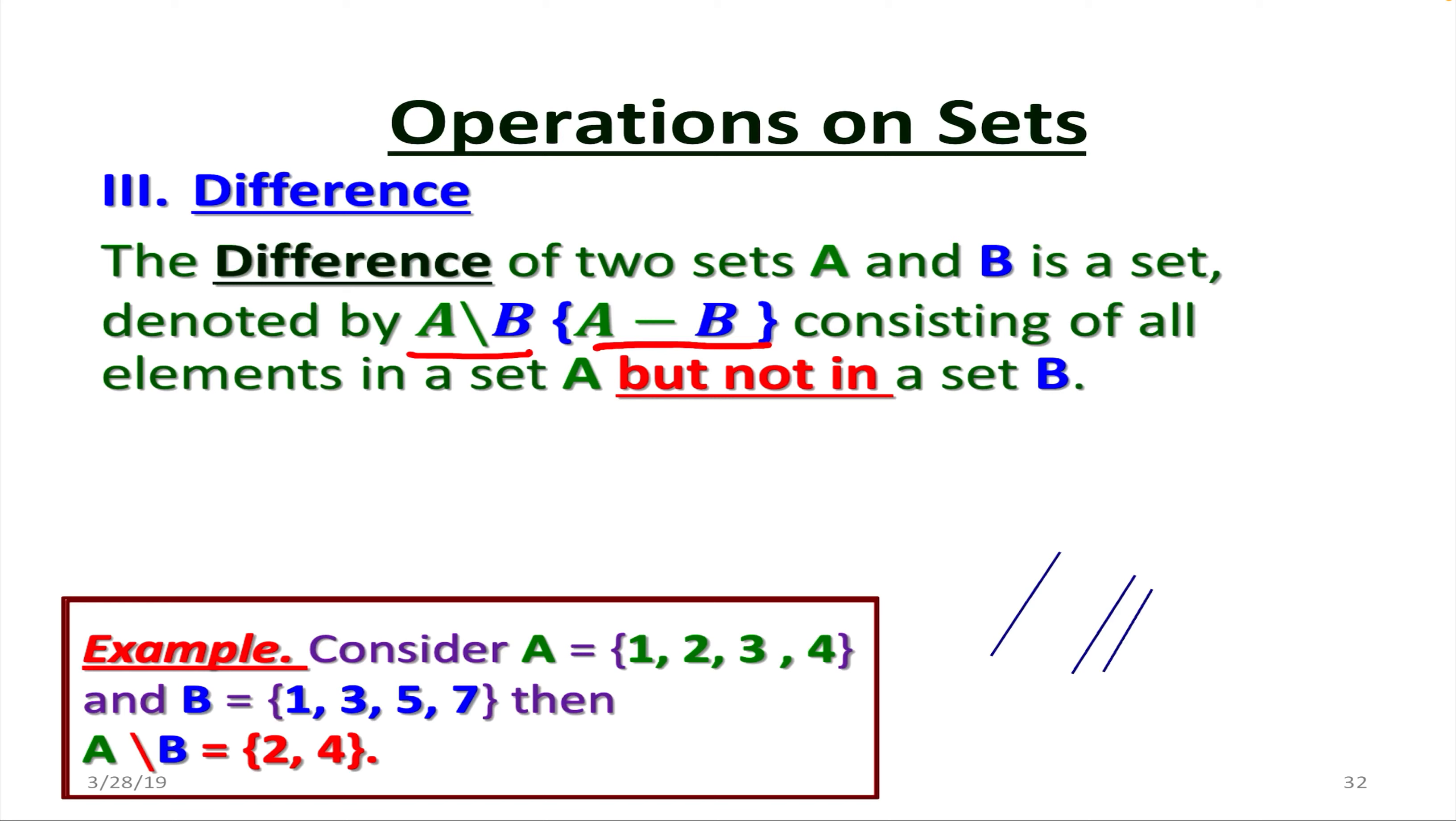For instance, say we have set A and set B. So A minus B is going to be two elements 2 and 4. Since the elements 2 and 4, they are in set A but they do not belong to set B. So A minus B has only two elements 2 and 4. They do not belong to B.